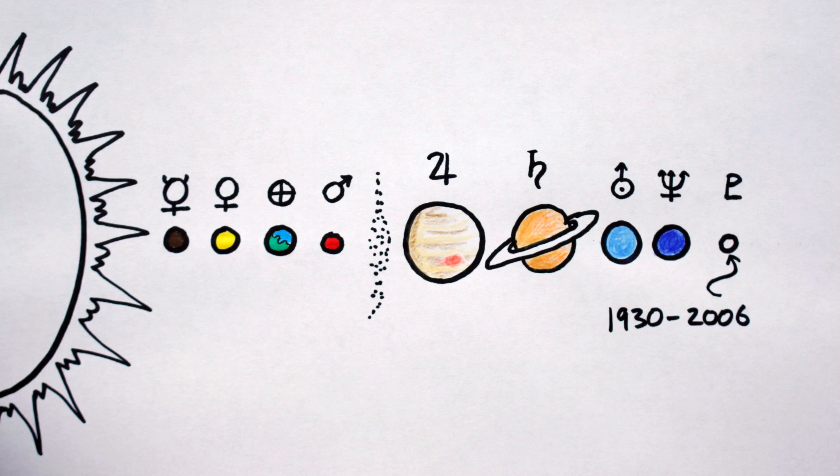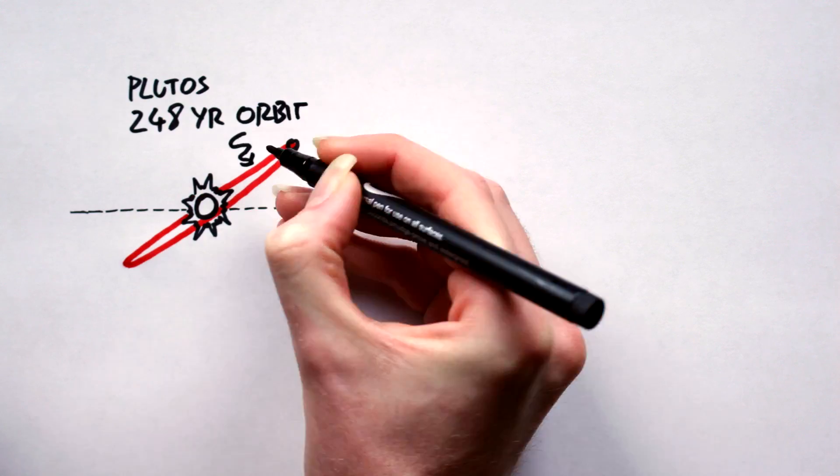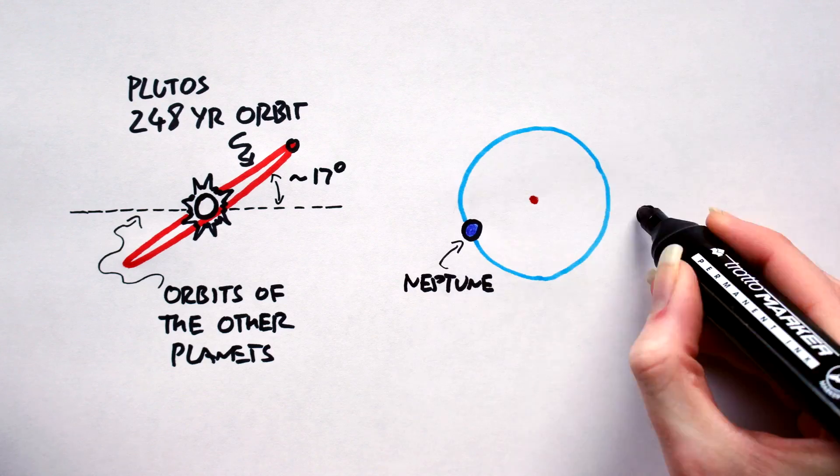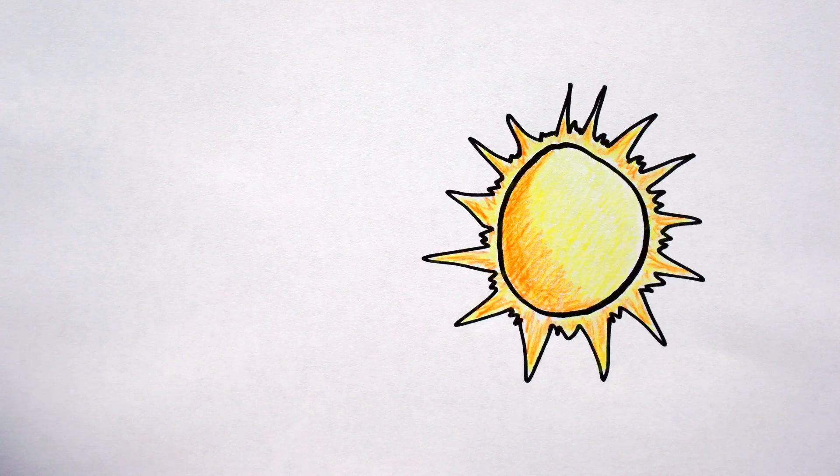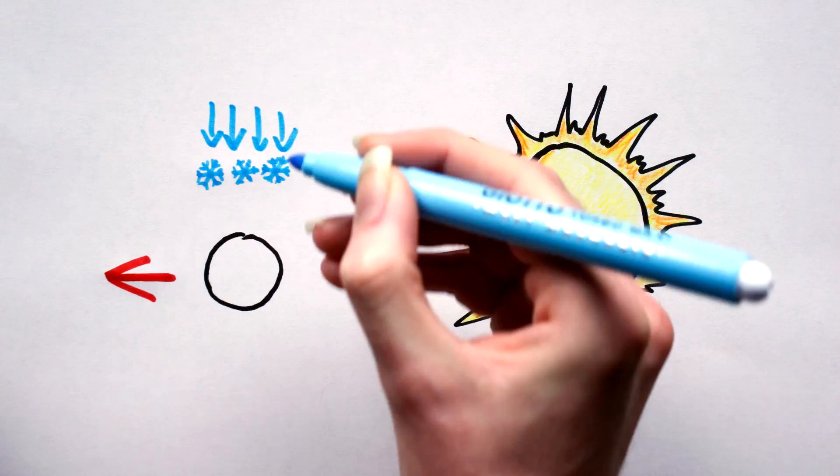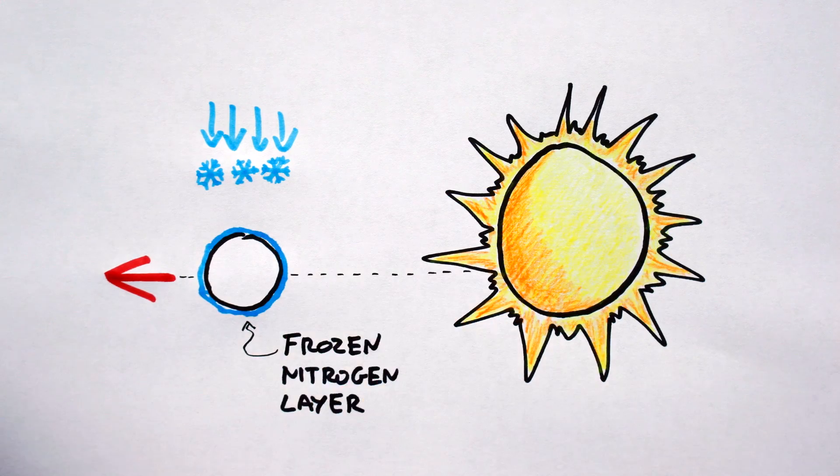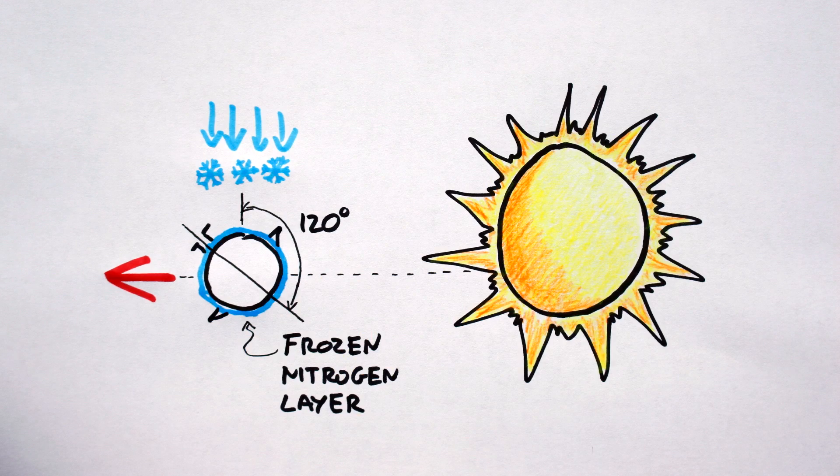It orbits on a 248 year long, highly inclined, elliptical, ducking inside of Neptune kind of orbit. Pluto's atmosphere is transient, or seasonal. That is, as it moves away from the sun, its atmosphere freezes and falls to the surface, coating it in a layer of frozen nitrogen. This, coupled with Pluto's 120 degree axial tilt, makes Pluto a very hostile world indeed.